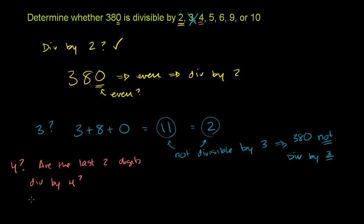So in this situation, is 80 divisible by 4? Now you could eyeball that. You could say, well, 8 is definitely divisible by 4. Or 8 divided by 4 is 2. 80 divided by 4 is 20. So this works. Yes. So since 80 is divisible by 4, 380 is also divisible by 4. So 4 works.